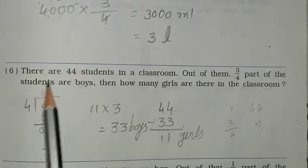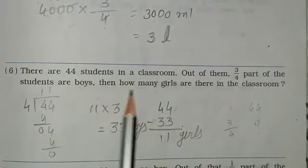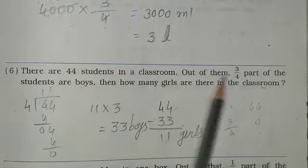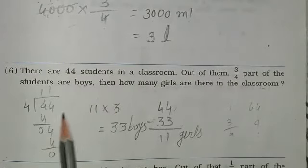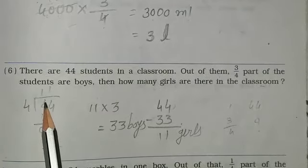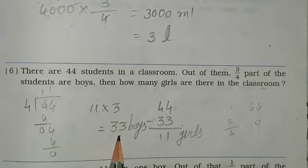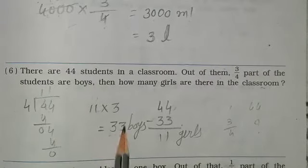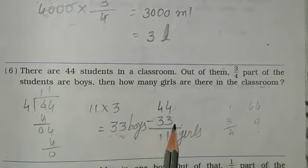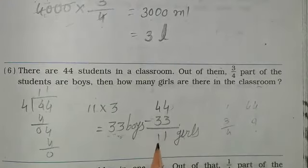Next, question number 6. There are 44 students in a classroom. Out of them, 3 upon 4 part of the students are boys. Then how many girls are there in the classroom? Total students is 44 and 3 upon 4 part are boys. First write 44 divided by 4, answer is 11. Then 11 multiplied by 3, total boys is 33. Now for girls: 44 minus 33 is equal to 11 girls. Our answer is 11 girls.